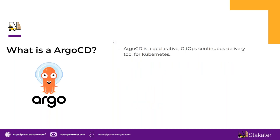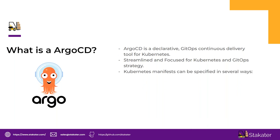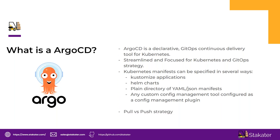Argo CD is a continuous delivery tool, similar to CircleCI or Jenkins, but streamlined and focused for Kubernetes. You can create an Argo CD application and point it to a Helm chart, plain YAML Kubernetes resources, or customized applications — and Argo CD will be responsible for deploying those things on your cluster. Mustafa will explain more about how Argo CD works and how we've structured the application inside our infrastructure.